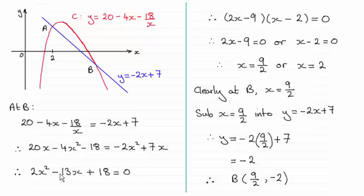And I could factorise this. You could use the quadratic formula if you want, but it factorises nicely. And then put each of these factors equal to 0, and then we end up with x equaling 9 over 2 or x equaling 2.